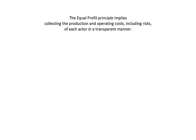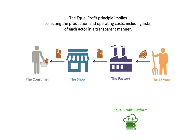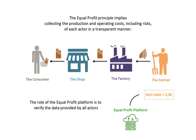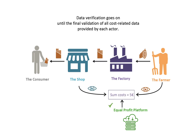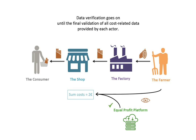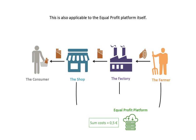The Equal Profit Principle implies collecting the production and operating costs, including risks, of each actor in a transparent manner. The role of the Equal Profit platform is to verify the data provided by all actors and to make this data visible to each individual actor. Data verification goes on until the final validation of all cost-related data provided by each actor. This is also applicable to the Equal Profit platform itself.